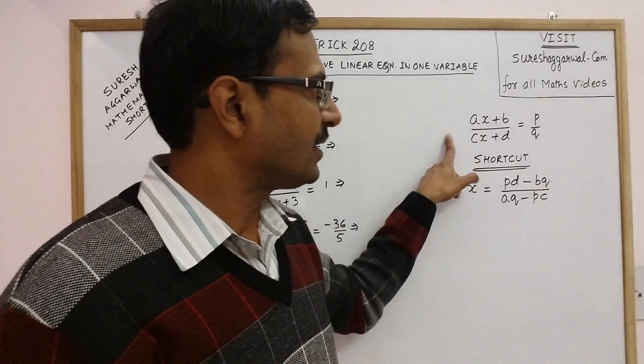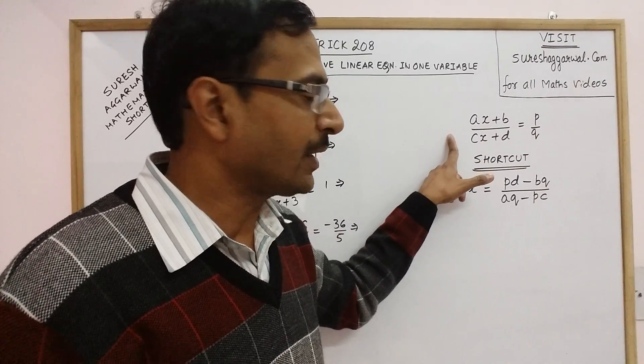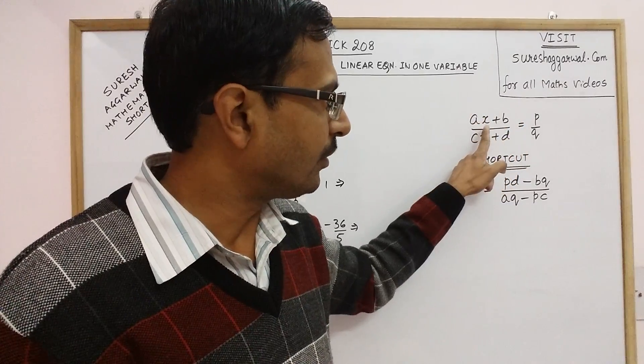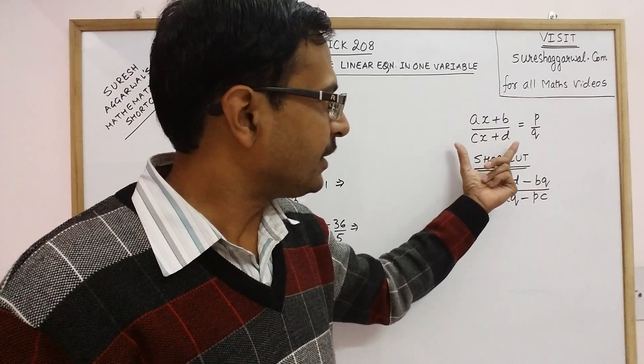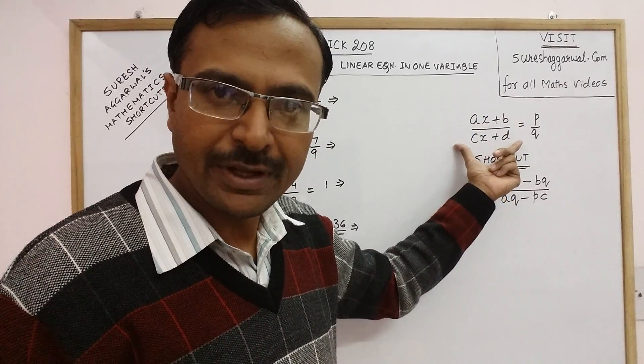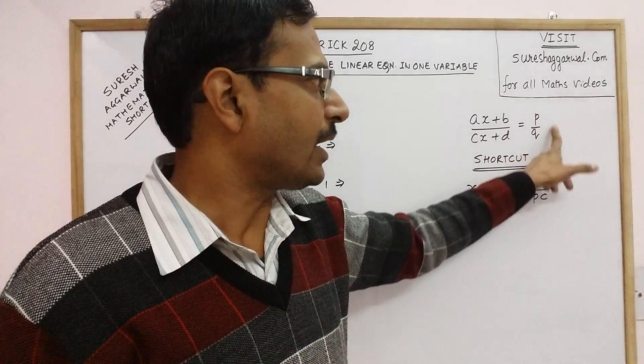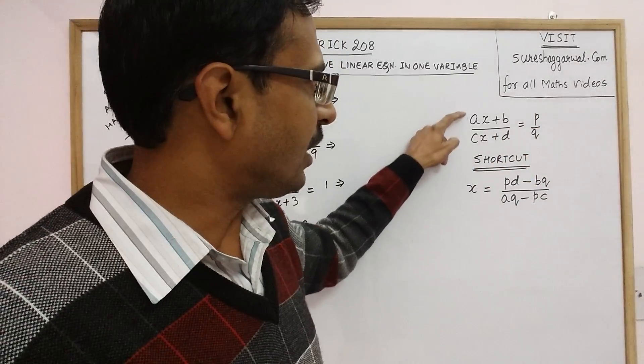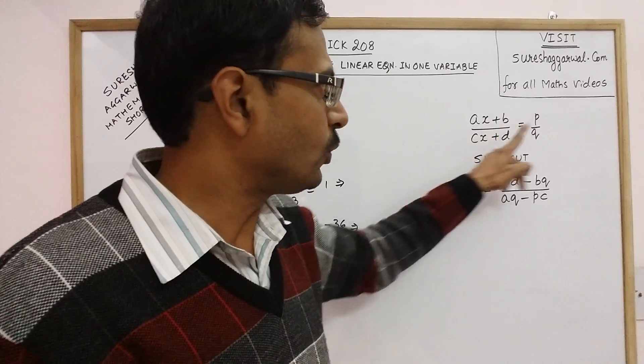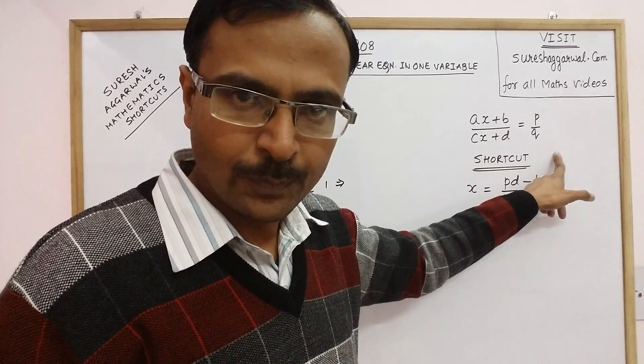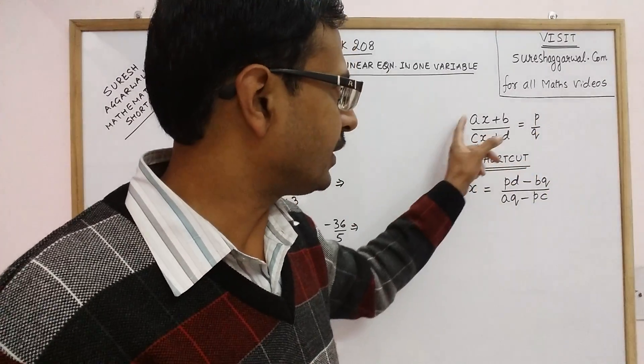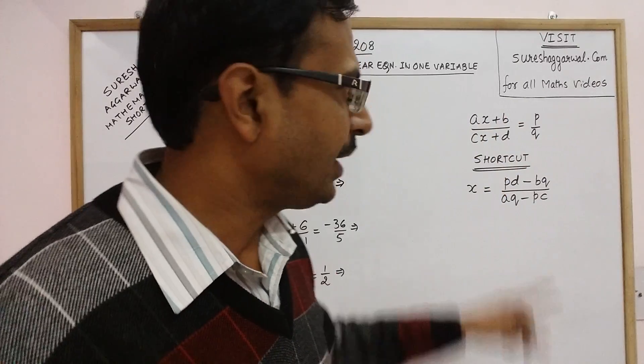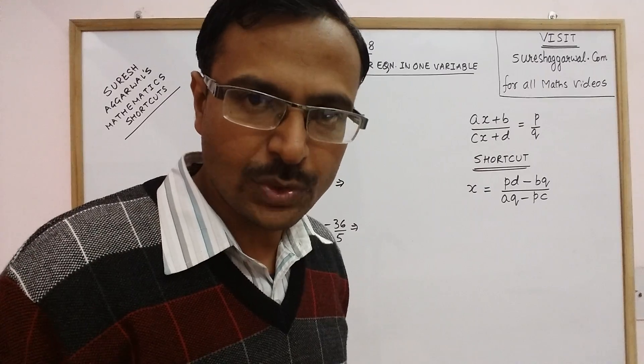This is the linear equation of the type (ax + b)/(cx + d) = p/q. Here we have a binomial of degree 1 in the numerator and in the denominator also we have a binomial of degree 1, and in the RHS you have a constant fraction. Now x is the variable and all other alphabets are constants. Now we need to find the value of x in this equation.